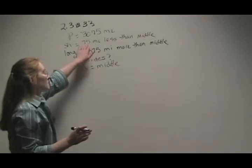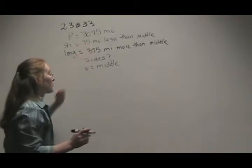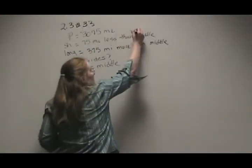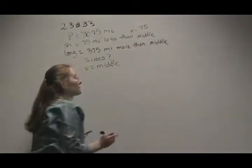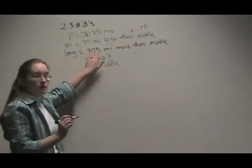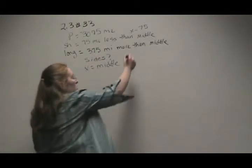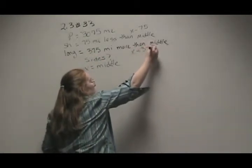So now this means 75 miles less than the middle, so we take x and we subtract 75. Here, 375 more than the middle, so x plus 375.